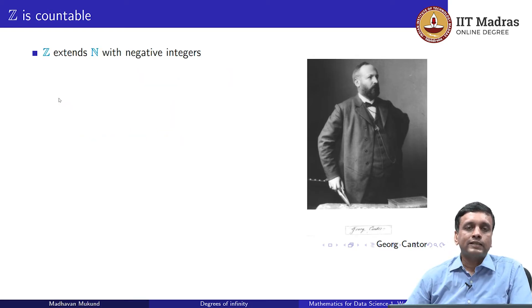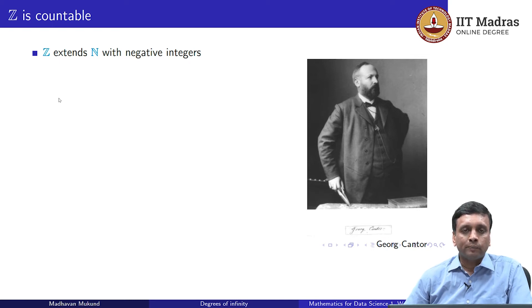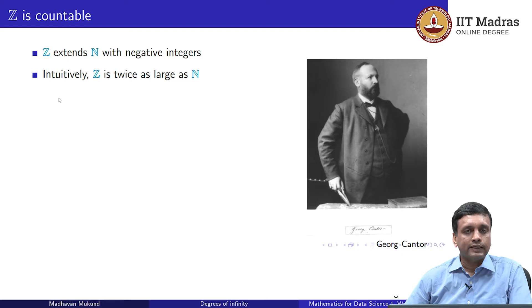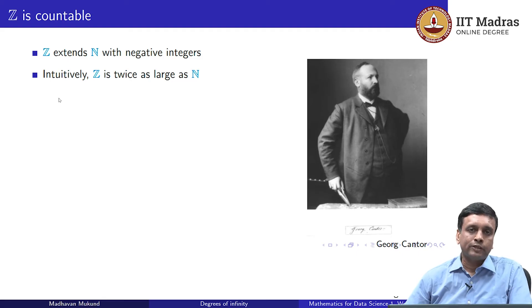Let us begin with the set of integers and show that it is countable. Why should it be a surprise if it is countable? Because Z extends N with negative integers. For every positive natural number, there is a corresponding negative integer in Z. So Z is roughly twice as big as N: for +1 you have −1, for +2 you have −2 and so on. So it seems contradictory that you can double a set and still have a set of the same size that you started with.